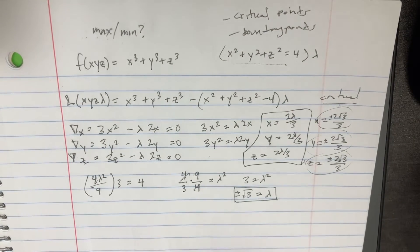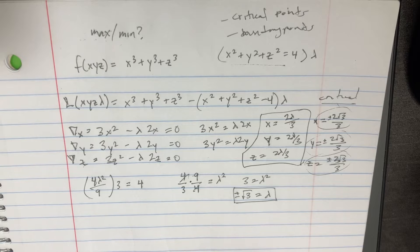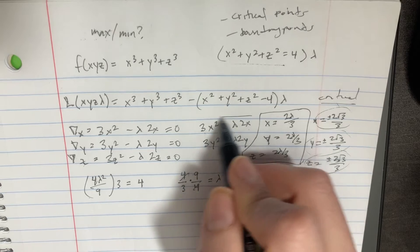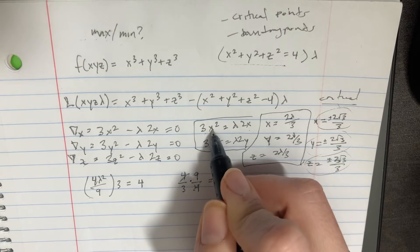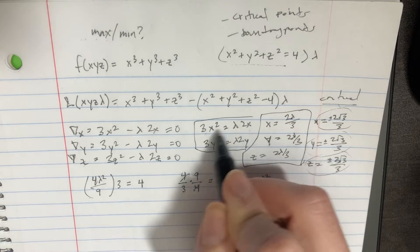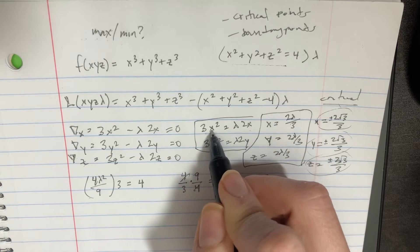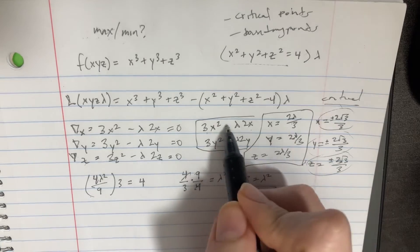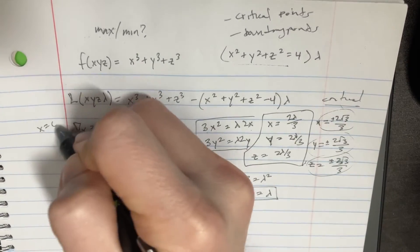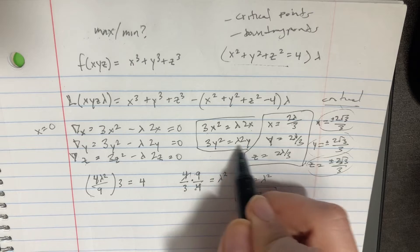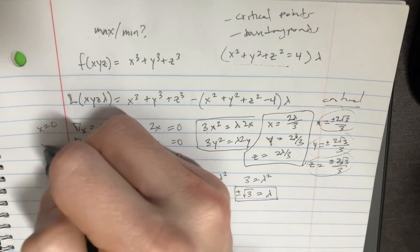For the boundary points, let's return to the constraint equation x² + y² + z² = 4. Notice that setting x = 0 can still satisfy the constraint — and similarly y = 0 or z = 0 are also possibilities.